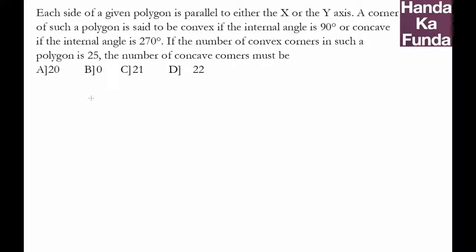Hello, in this particular question we are given a polygon which has sides parallel either to the x-axis or to the y-axis. The simplest one that I can think of is essentially a rectangle, because all my angles will be 90 degrees because they are parallel either to the x-axis or to the y-axis.